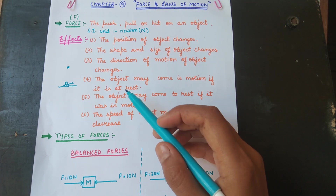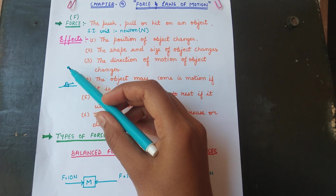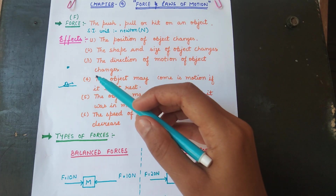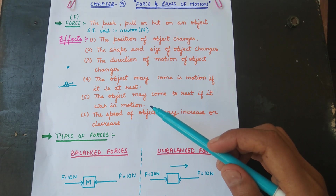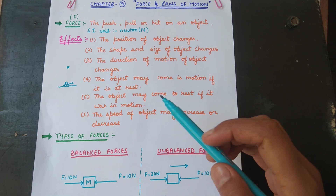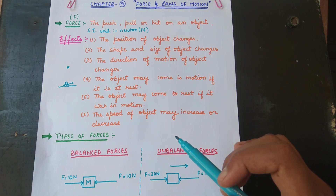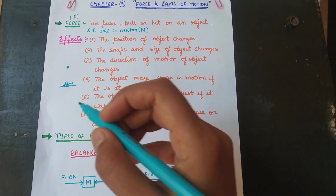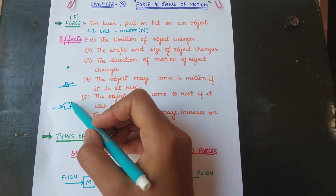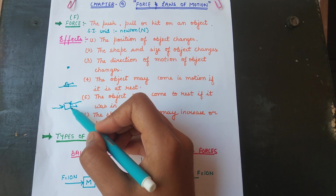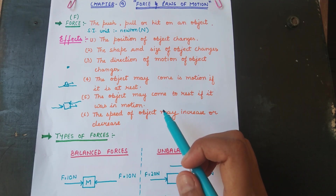An object may also come into motion if it was at rest — for example, a football at rest begins to move when we apply force. An object may also come to rest if it was previously in motion. The speed of an object may also increase or decrease: if force is applied in the direction of motion, velocity increases; if force is applied in the opposite direction, velocity decreases.